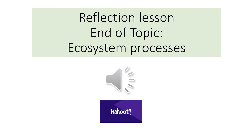Hi everyone. So this is our reflection lesson — an end of topic reflection lesson on ecosystem processes. Same as before, we'll be doing a green reflection sheet, going through our orange RAG sheet to see how we've done and fill in any gaps in knowledge. Then we'll have a few targets to do with ecosystem processes, and then we are going to have a game of Kahoot.